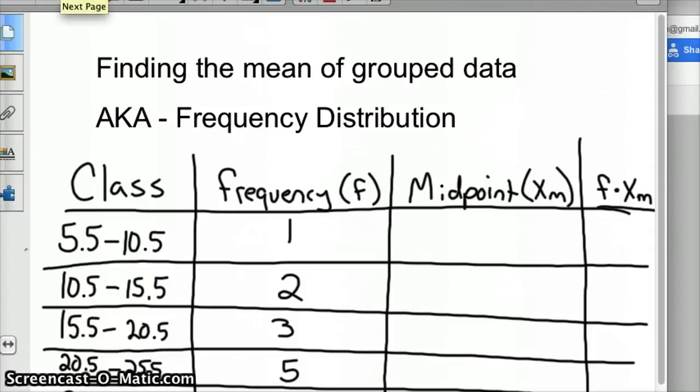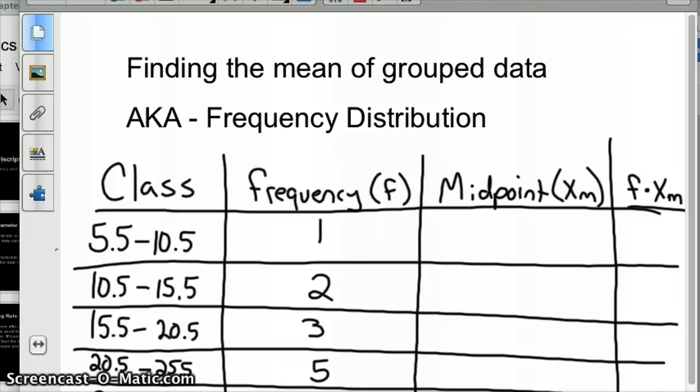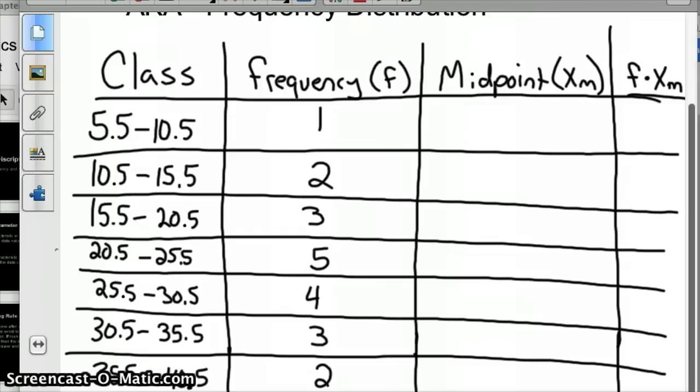It gets tricky when we have to find the mean of grouped data, for instance frequency distributions. Maybe I scanned the whole track population in the United States and randomly asked one person from every track team in Nebraska how far they ran. There are so many of them we grouped the data. We have this table with classes: one person ran between 5.5 and 10.5 miles, two people ran between 10.5 and 15.5 miles, and so on. We had 20 people in this sample.